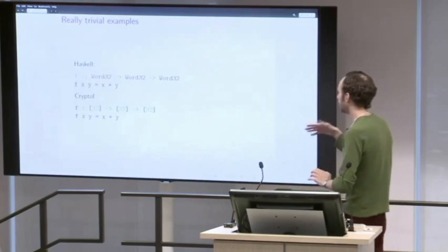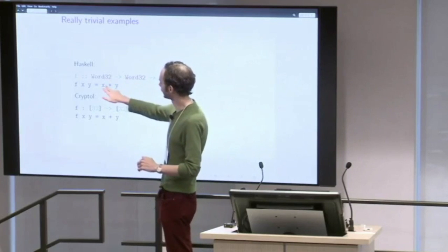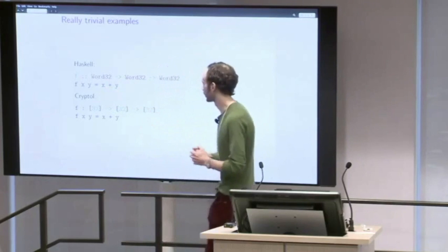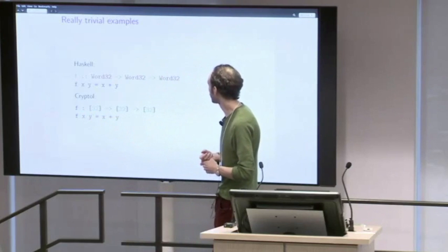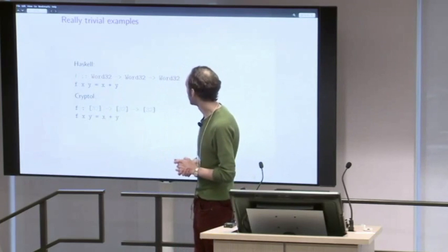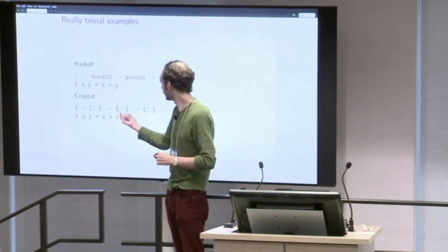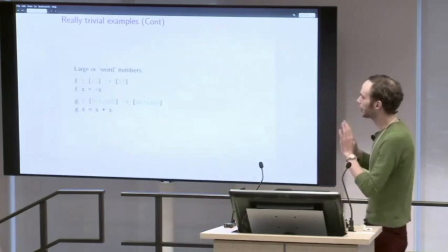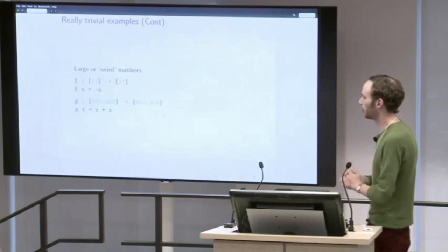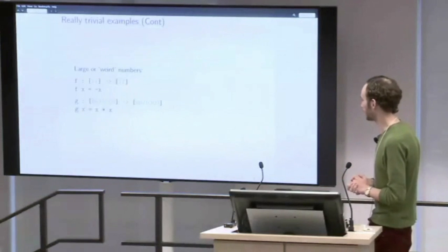Here's an example of a Haskell function: it takes two 32-bit words and returns a 32-bit word — it returns their addition. Here's the Cryptol translation — it looks pretty similar. They actually erred on the side of using the correct syntax for the colon. It has a literal size of the integers inside the type. That number can be arbitrary — so if you ever wanted 17-bit integers in your programming language, Cryptol is definitely your language. It uses GMP underneath whenever it interprets all this, so it's pretty quick.